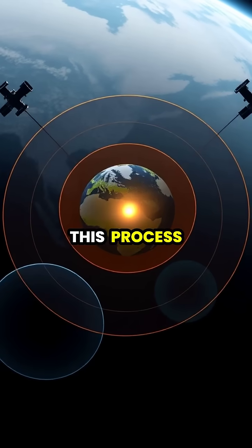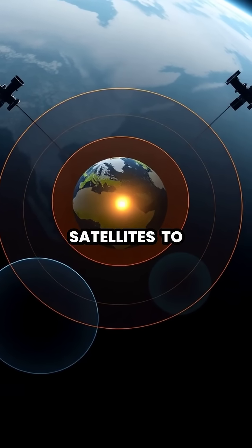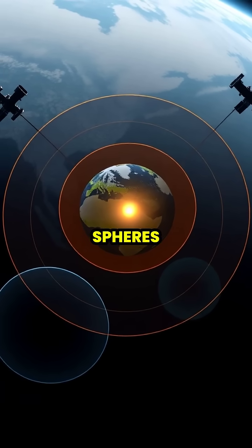This process, called trilateration, requires signals from at least three satellites to determine your position on Earth's surface through the intersection of these measurement spheres.